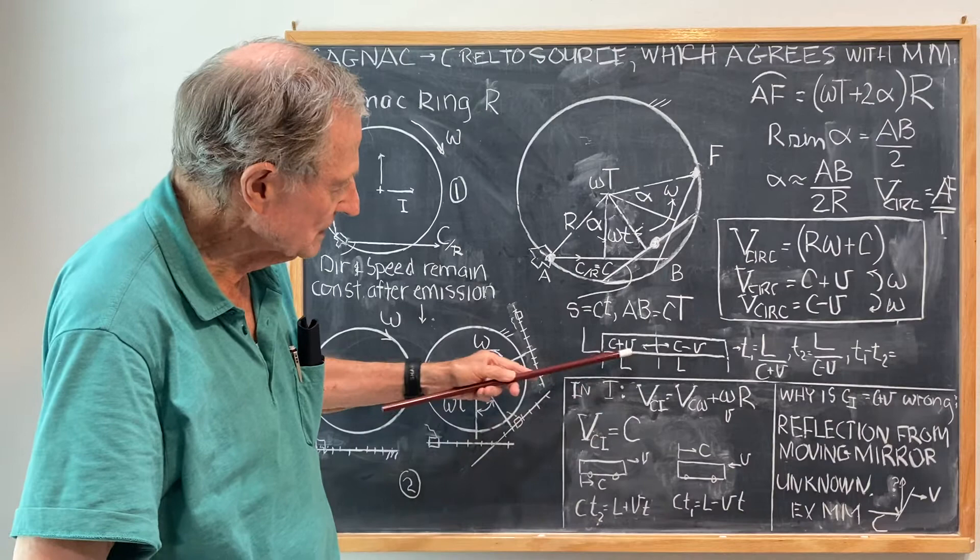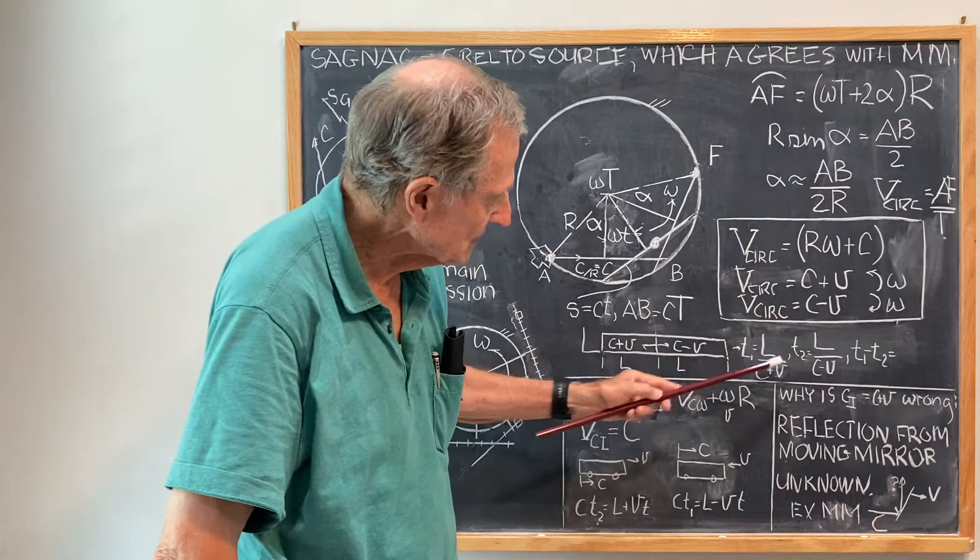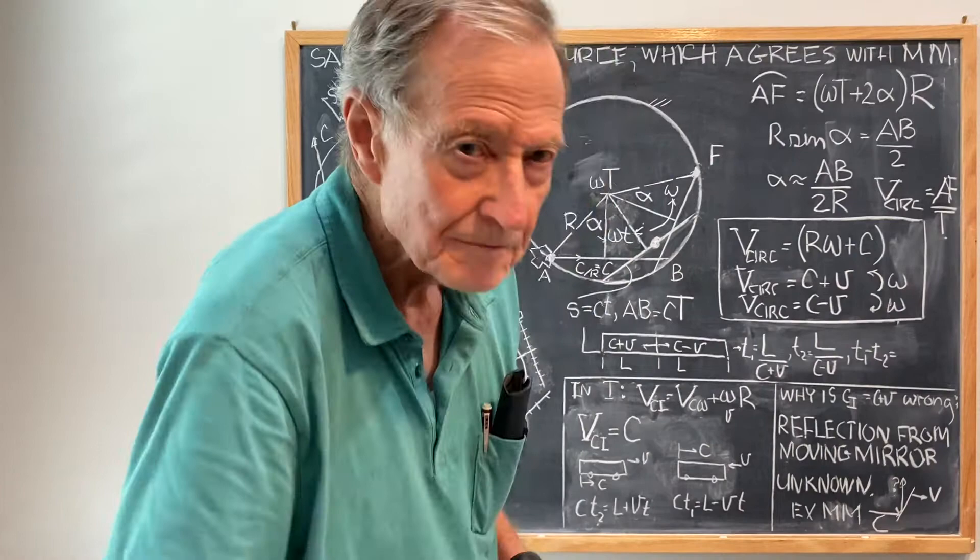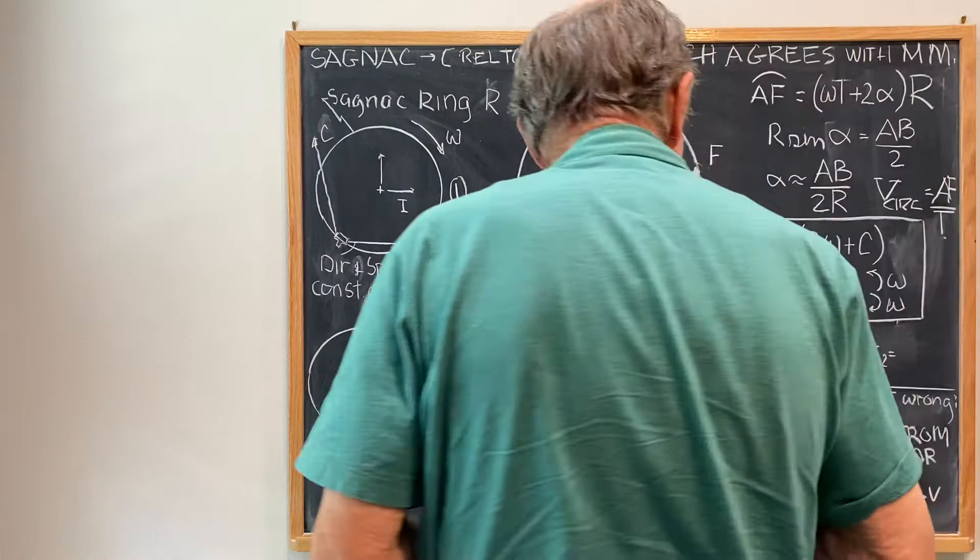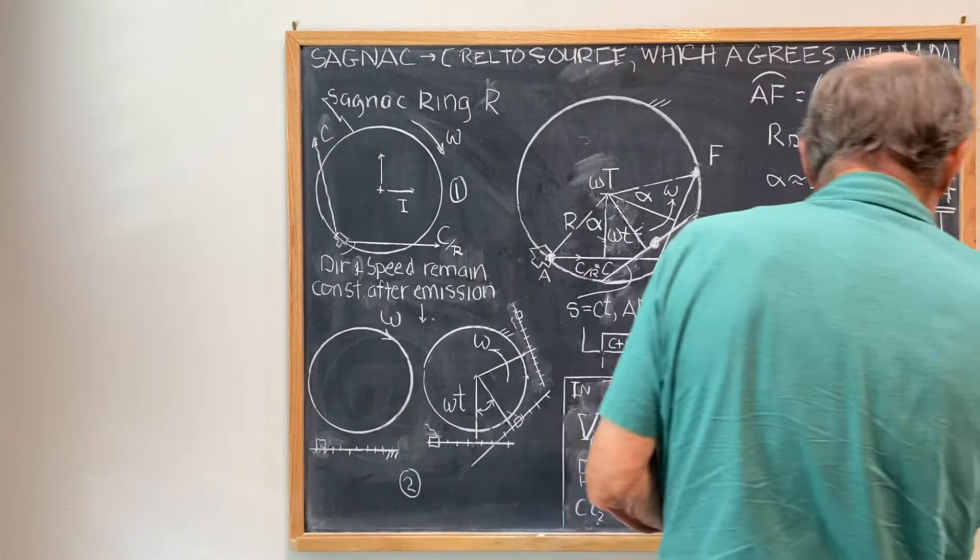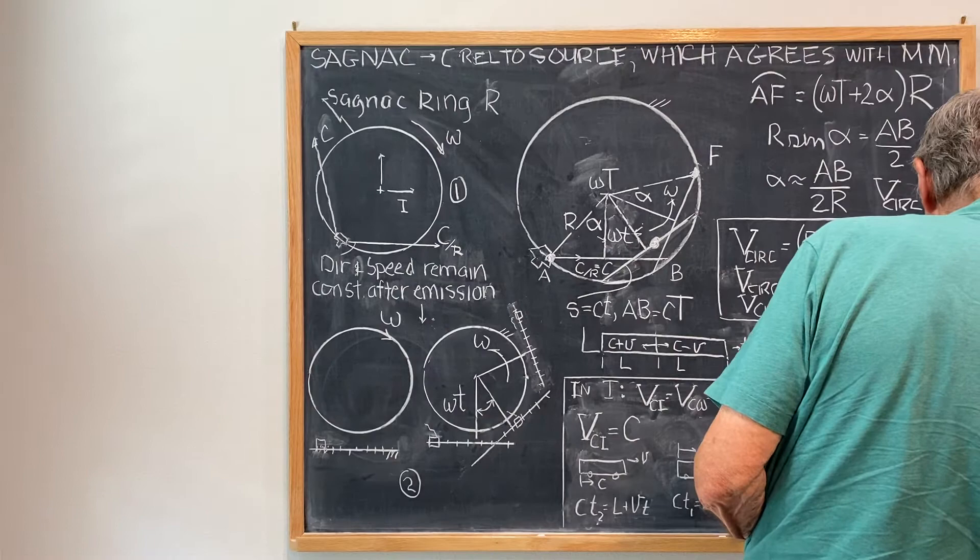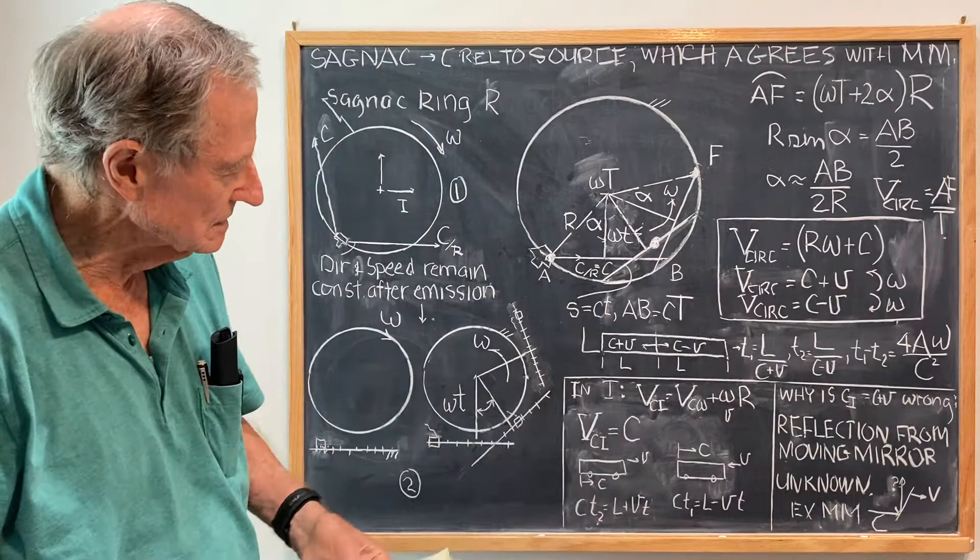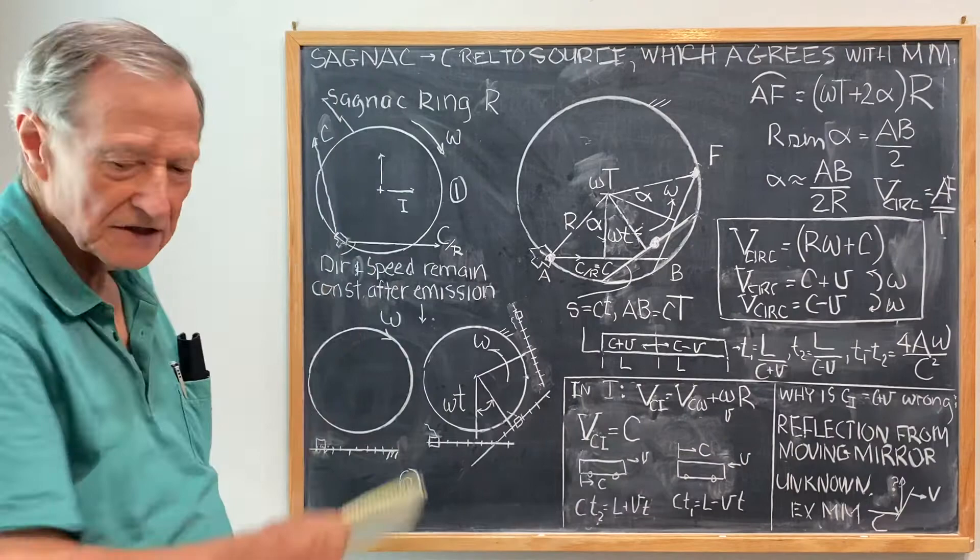And from that you get that C plus V times T is equal to L, and C minus V times T is equal to L. T1 is L over C plus V, T2 is equal to L over C minus V. And from that you get the classic result, T1 minus T2 is equal to 4A omega over C squared. That's in any textbook. That's the time difference for the two photons in the Sagnac ring.